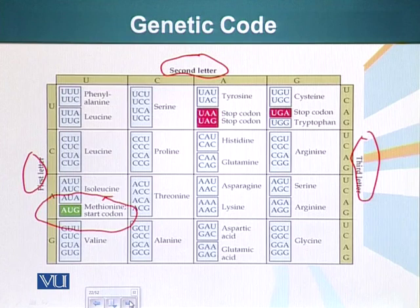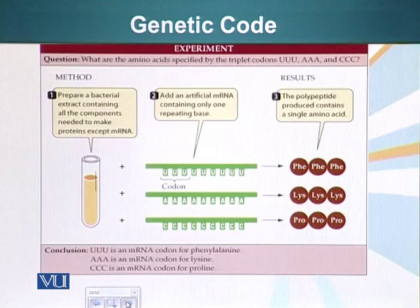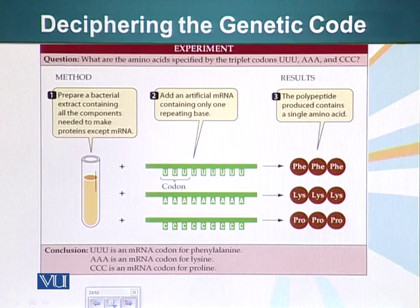There are also three stop codons. Whenever these three stop codons appear in messenger RNA, they tell the ribosomes to stop making protein when they hit the stop codon. So how was the genetic code deciphered? How did people know which three nucleotides specify which particular amino acid in a protein?